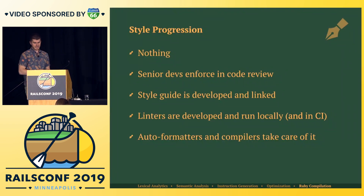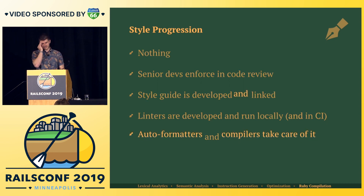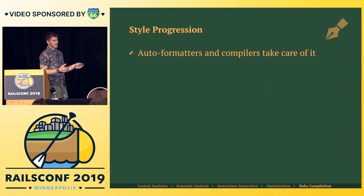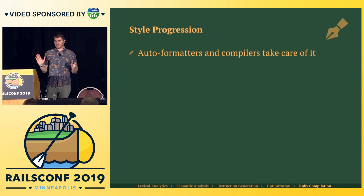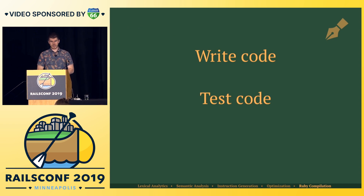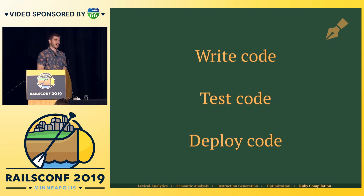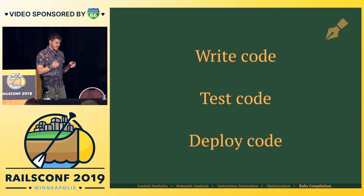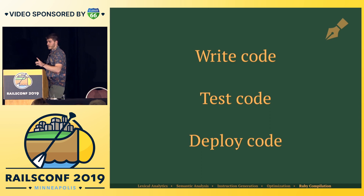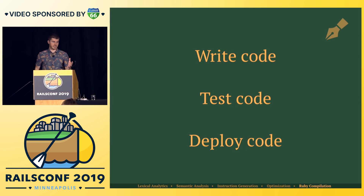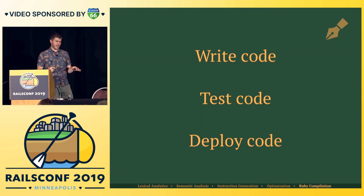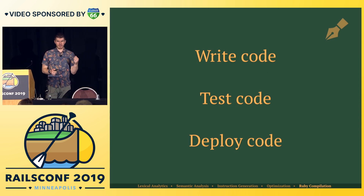Bundle audit should be taken care of by the Ruby language. Rubocop — no — an auto formatter should take care of the style rules. The performance rules should be taken care of by a compiler. Brakeman's security vulnerabilities should be taken care of by different APIs being chosen by the compiler or an auto-formatter just changing the method. I just want to test my code and deploy my code. Most of the micro-optimizations we've been obsessing over as a community don't matter in your app — most of the time we're running a micro-optimization that's within a framework, within Rails.